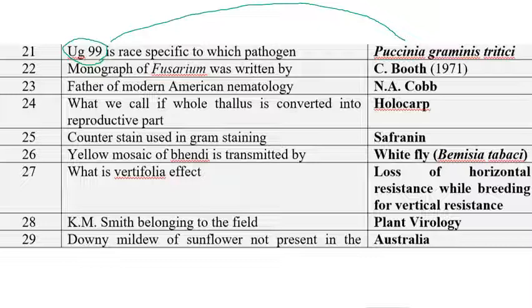The monograph of Fusarium was written by C. Booth in the year 1971. The father of Modern American Nematology is N.A. Cobb.